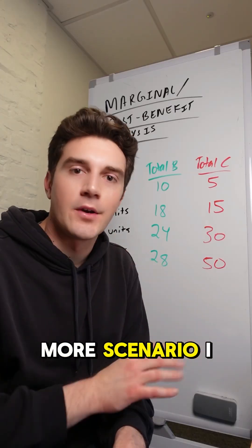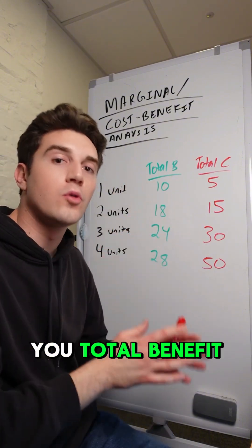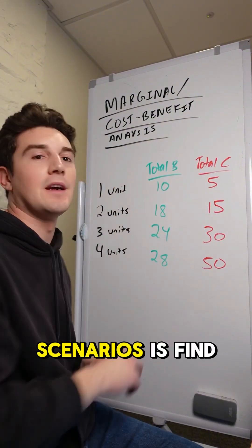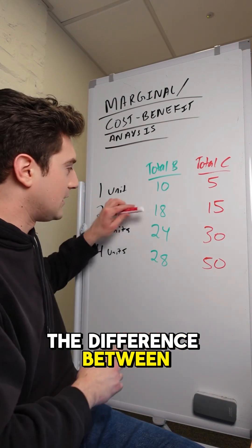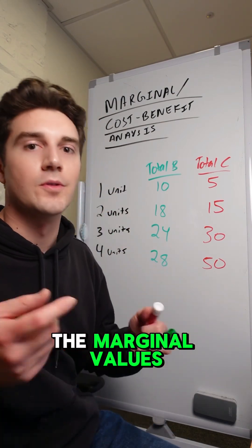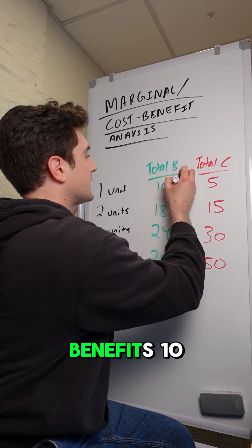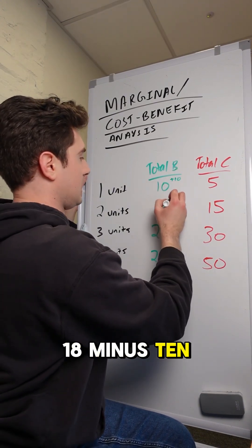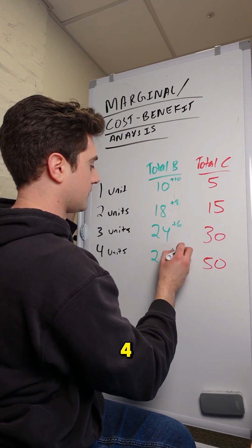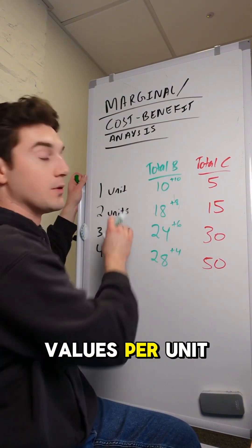Now there's one more scenario I want to make sure you're prepped for, and that's when your professor gives you total benefit and total cost values. All we've got to do in these scenarios is find the difference between each total cost or benefit to calculate the marginal values. For example: the first unit has a marginal benefit of 10; the next unit, 18 minus 10 is 8; the next one is 6, and the next one is 4. These are our marginal benefit values per unit.